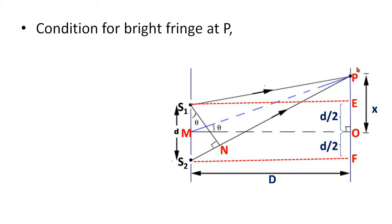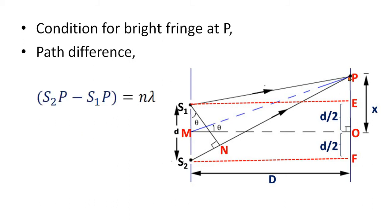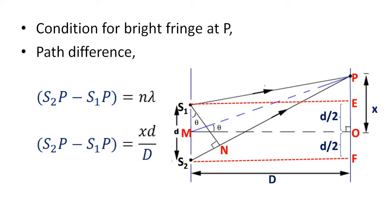Condition for bright fringes: we have the equation for path difference. S1P is one path, S2P is another path. So path difference is equal to S2P minus S1P. Path difference is an integral multiple of lambda, that is S2P minus S1P equal to n lambda. We already proved that path difference S2P minus S1P equals xd divided by capital D.